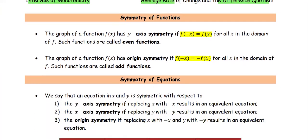For the symmetry of functions, the graph of function f(x) has y-axis symmetry if f(-x) equals f(x) for all x in the domain. This way we call the function an even function.